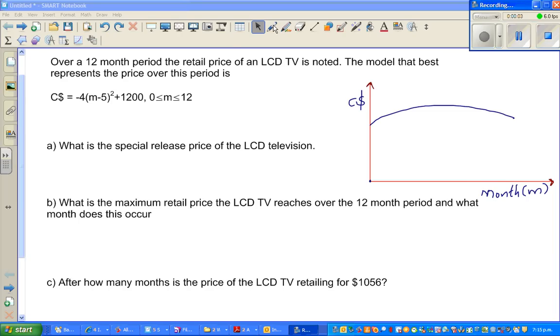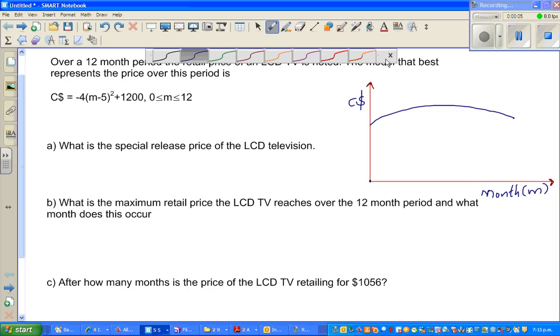In this video I'm going to do an example on graphs and application of graphs. Over a 12-month period the retail price of an LCD TV is noted. The model that best represents the price over this period is C equals minus 4 times m minus 5 squared plus 1200 where m is the number of months.